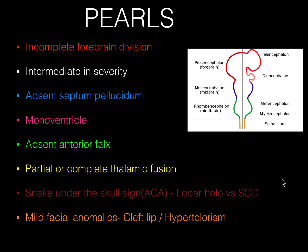Let us review the classic features and pearls. Semilobar holoprosencephaly represents incomplete forebrain division — there is a defect in forebrain formation from the prosencephalon — and it is intermediate in severity. Key features include: completely absent septum pellucidum, single ventricle, absent anterior or posterior falx, and partial or complete thalamic fusion. The snake under the skull sign is very important in differentiating lobar holoprosencephaly from septo-optic dysplasia — this sign is present in lobar holoprosencephaly but absent in septo-optic dysplasia.